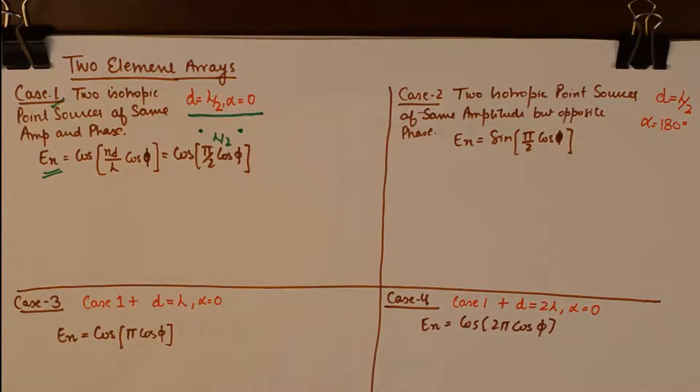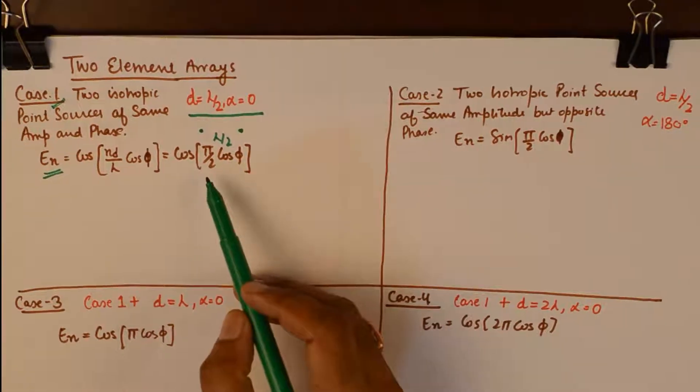So I will start off with the first case. This is a very popular case where the distance between the elements is lambda by 2. And the phase is same or in other words alpha is 0. It is a case of broadside array.